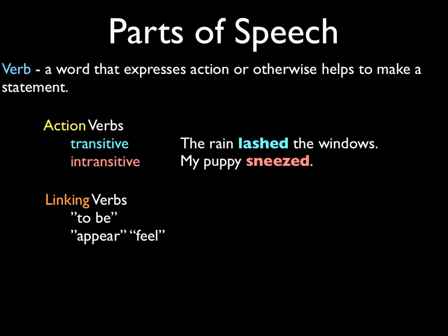Then we have linking verbs. Probably the most commonly used linking verb comes from 'to be,' which is a very irregular verb. We often don't think of 'I am' as coming from the verb 'to be,' but it is: I am, you are, he/she/it is, they are, we are — those are all part of the verb 'to be.' For example: 'Jane was exhausted.' 'Was' is the past tense of 'is' — a linking verb. 'Exhausted' is what Jane was; Jane and exhausted in this case are considered equal.